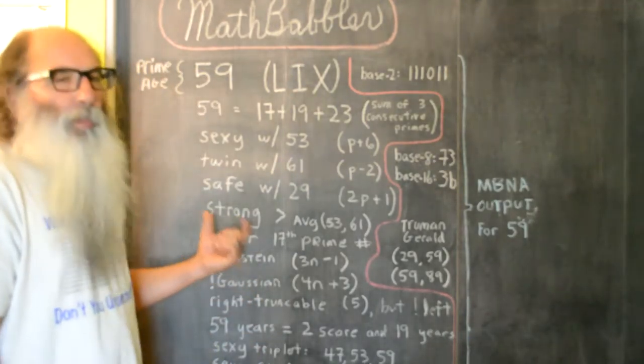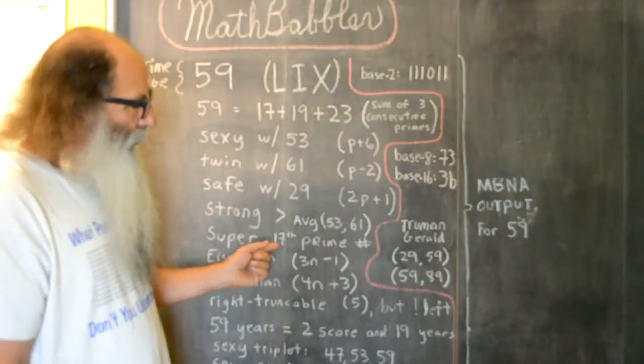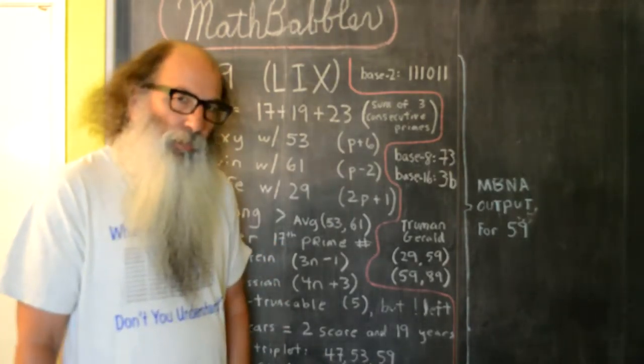59 is a super prime because it's the 17th prime number, and 17 is a prime number, so that makes it a super prime.